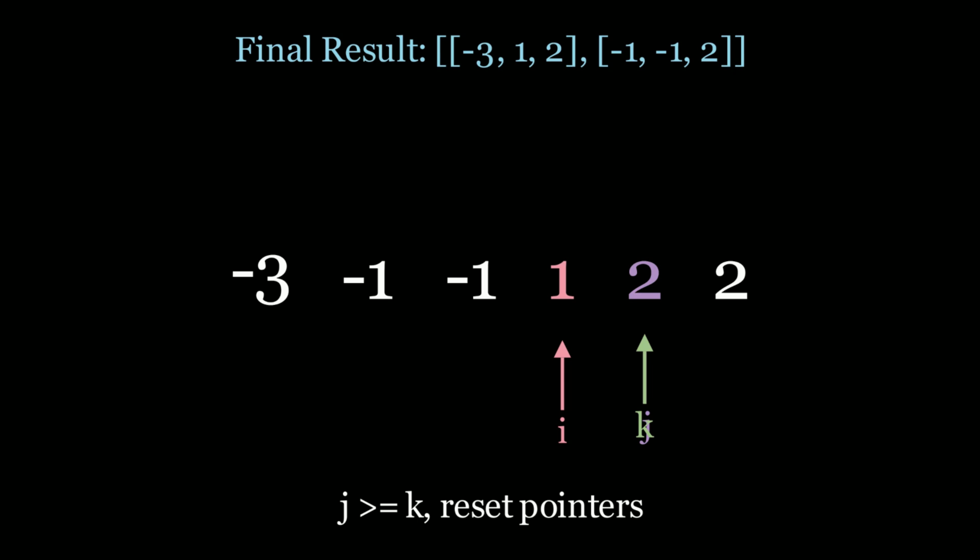What's the time and space complexity? We have one for loop for i, and for every iteration of i we move j and k using the two-pointer technique. At most we scan every value for j and k, which is O(n), inside an O(n) loop. So the time complexity is O(n²) with O(n) space. O(n²) is much better than O(n³), so we found the optimal solution. Sorting was free because n log n is dominated by n squared, so the overall complexity is just O(n²).